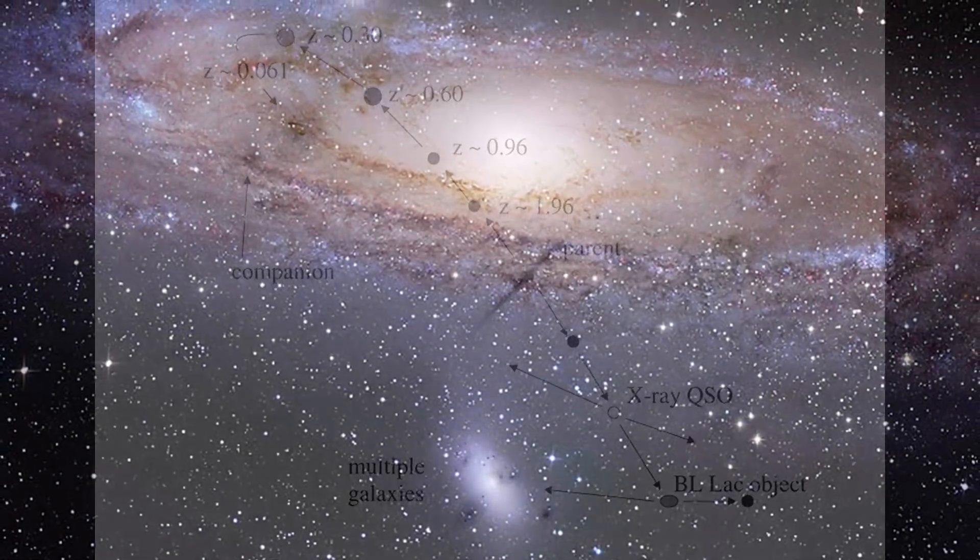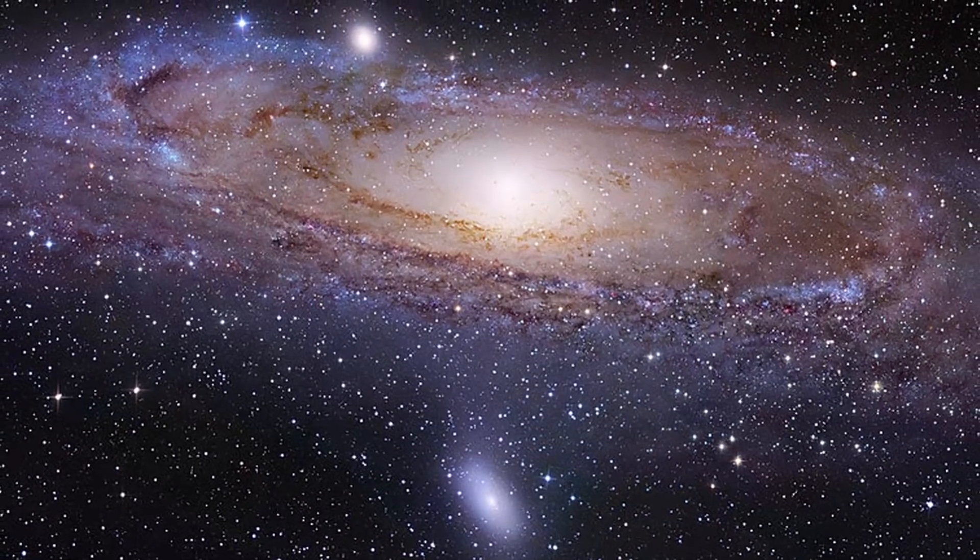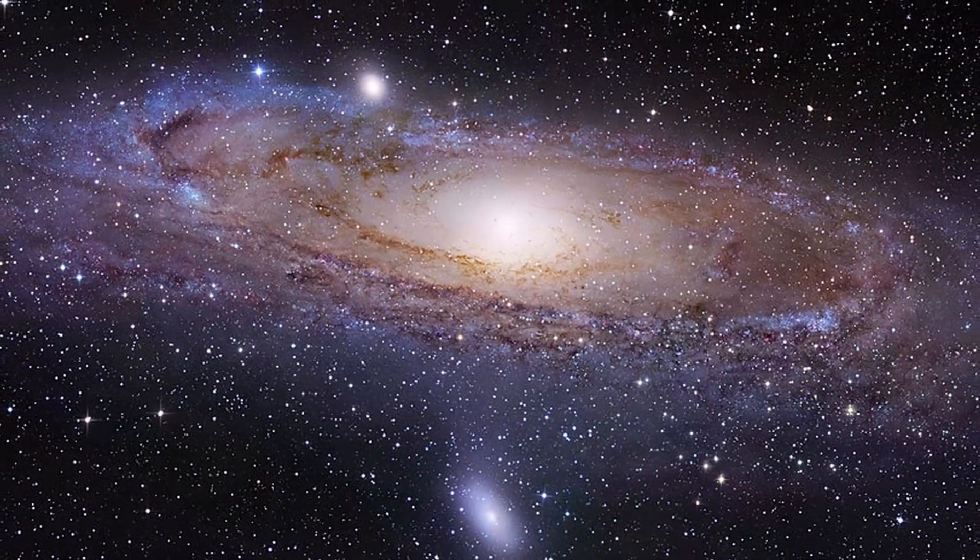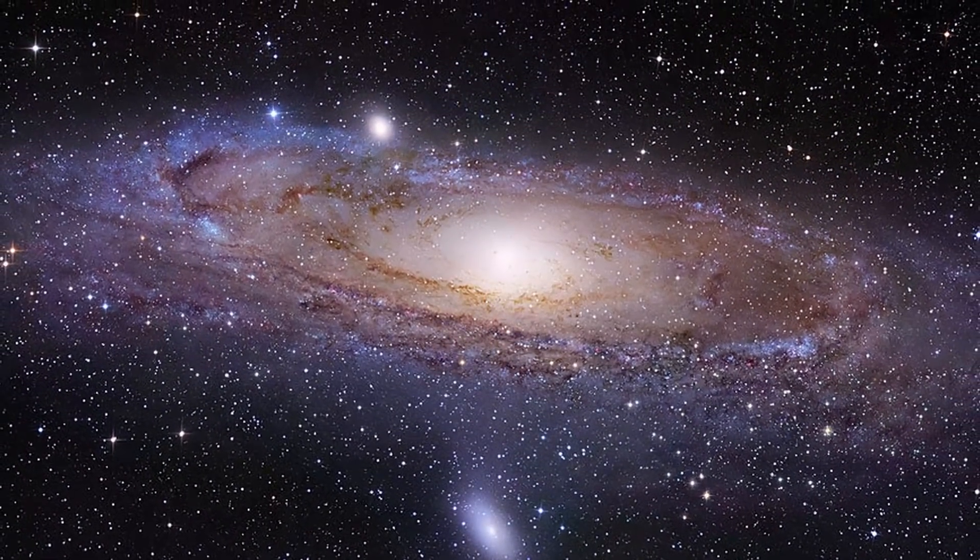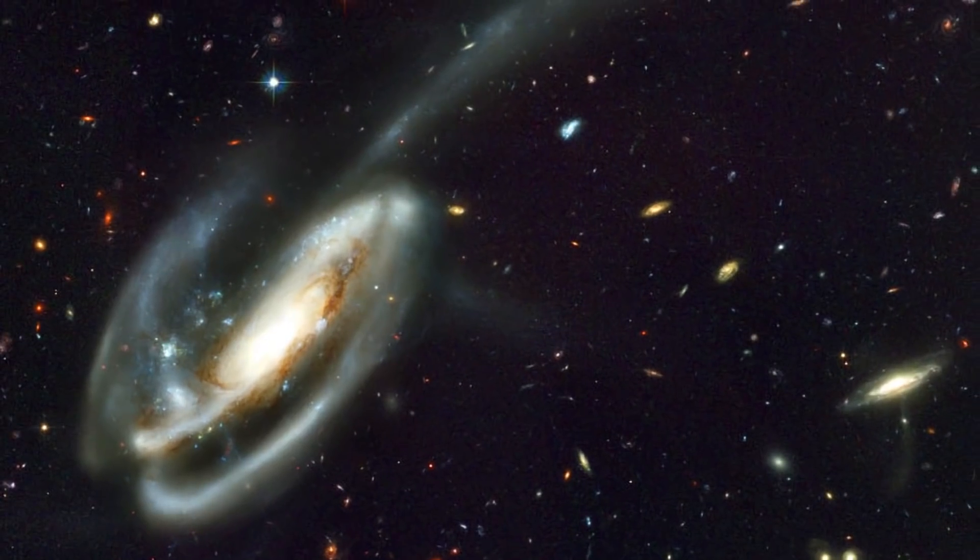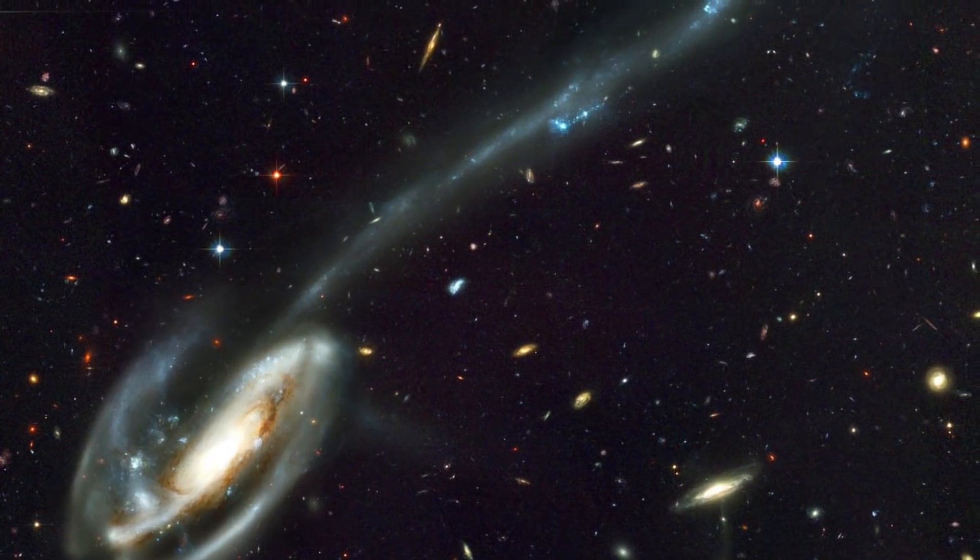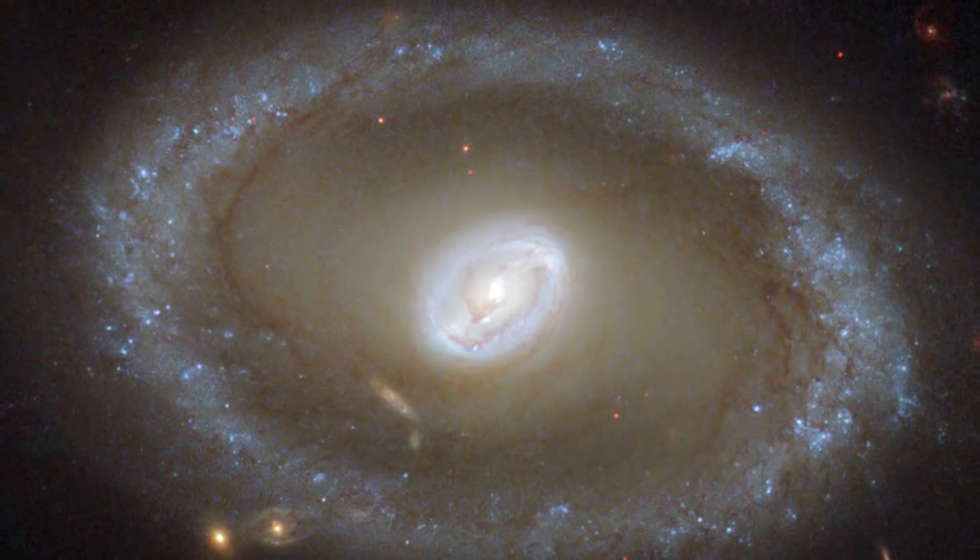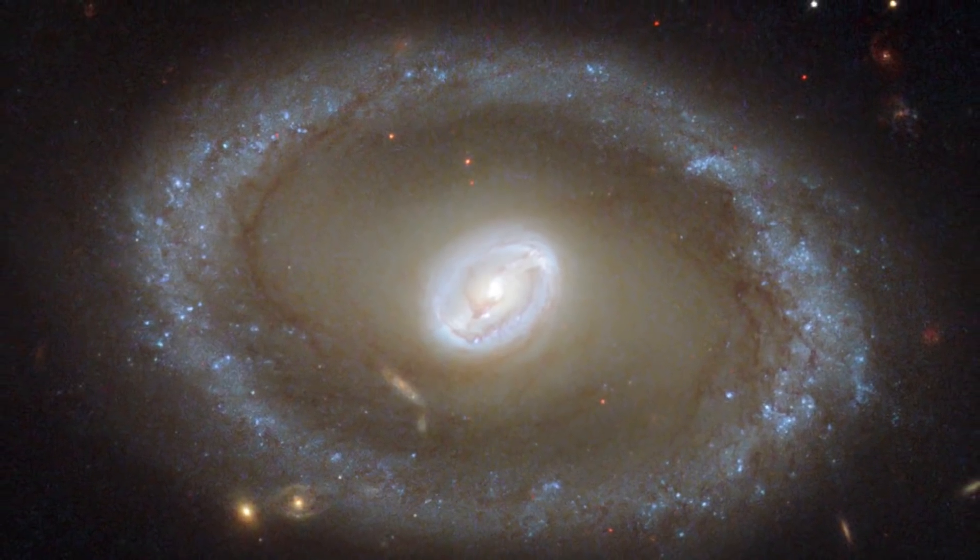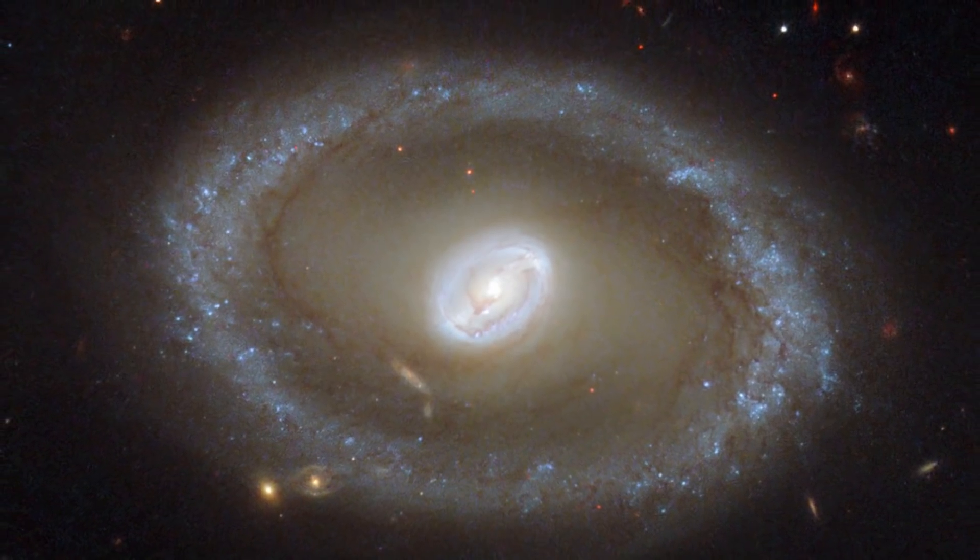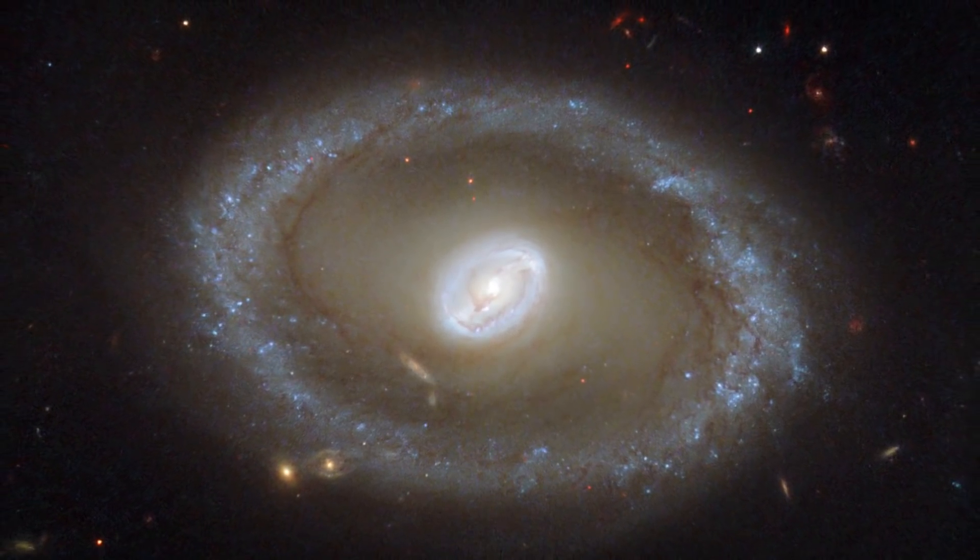The standard model of cosmology suggests companion galaxies are the remains of collisions with other galaxies or were simply captured by the host galaxy. If this was the case, we would expect to find dwarf galaxies evenly distributed around host galaxies, but this is not what we find.